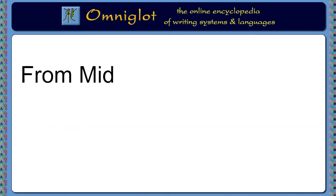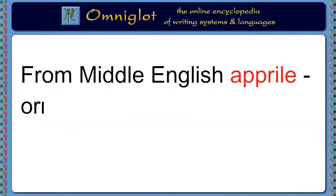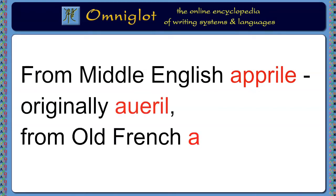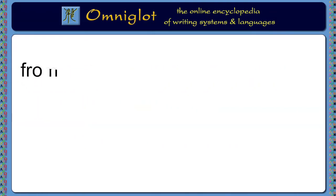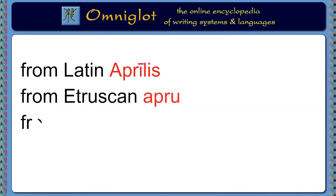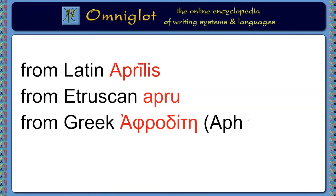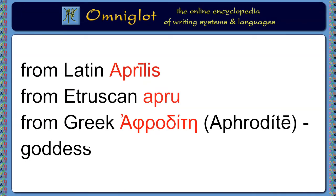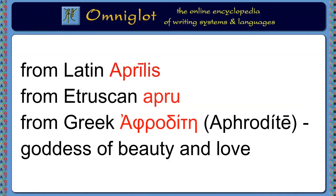April comes from the Middle English Aprile, which was originally Auril, from the Old French Avril. The Middle English word was re-Latinised to make it like the Latin name for this month, Aprilis, which referred to the month of the goddess Venus, and possibly came from the Etruscan Apru, from the ancient Greek Aphrodite, goddess of love.